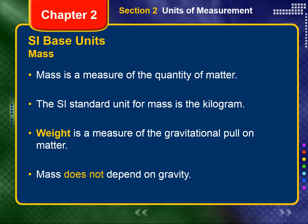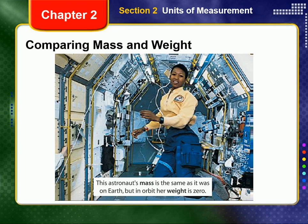The milligram is one one-millionth of a kilogram. Mass is often confused with weight because people often express the weight of an object in grams. Mass is determined by comparing the mass of an object with a set of standard masses on a balance. Weight is a measure of the gravitational pull on matter. Unlike weight, mass does not depend on gravitational attraction. Weight is typically measured on a spring scale. The weight of an object on the Moon is about one-sixth of its weight on Earth. The astronaut's mass is the same as it was on Earth, but in orbit, her weight is zero.